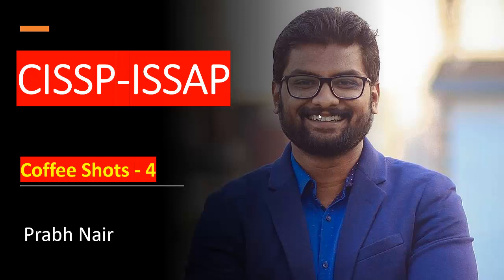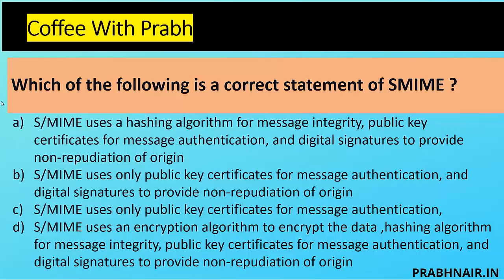Without wasting time, let's start with the first part. The first coffee short: which of the following is a correct statement of S/MIME? S/MIME basically means Secure Multi-purpose Internet Mail Extension. Option A: S/MIME uses a hashing algorithm for message integrity — which is true, achieved through SHA — public key certificate for message authentication — also true — and digital signature to provide non-repudiation of origin — also true. So far, option A looks very accurate.